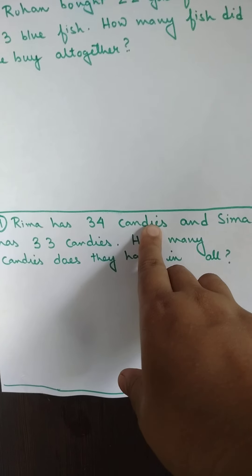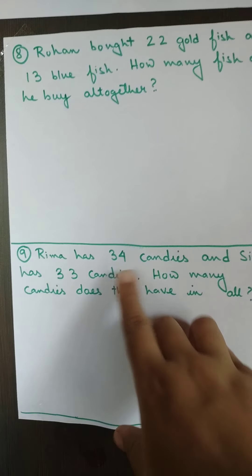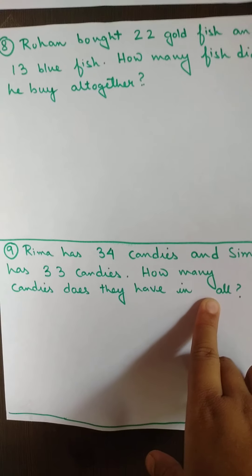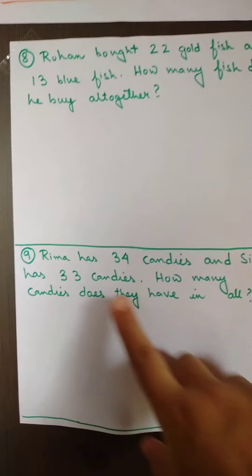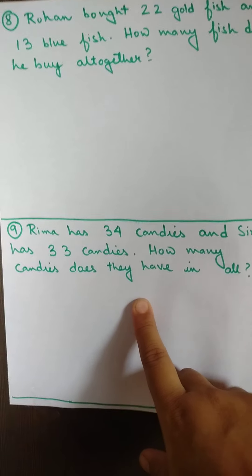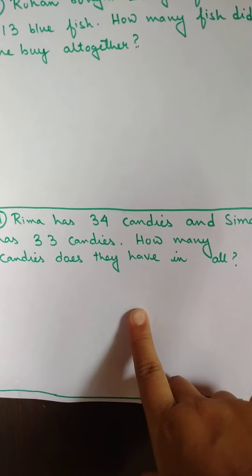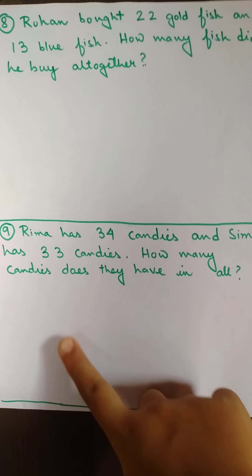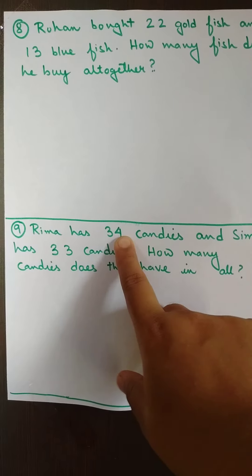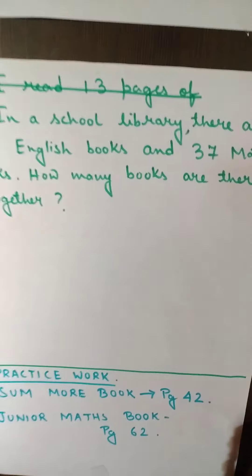Number nine: Rima has 34 candies and Sima has 33 candies. How many candies do they have in all? This is also very easy. You will write number of candies Rima has — 34 — and number of candies Sima has — 33. Therefore, total number of candies is 34 plus 33.